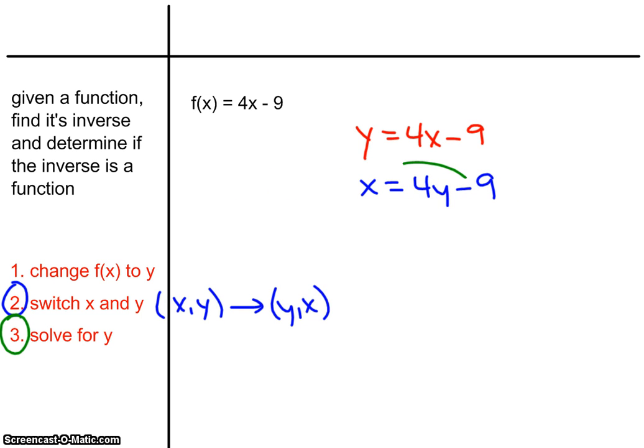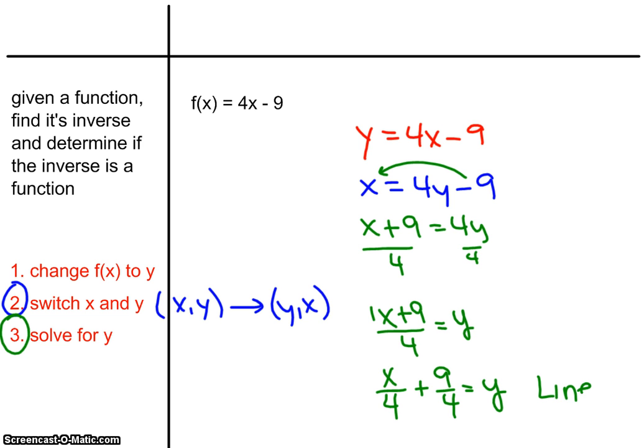so first thing what I'd do is I'd bring the 9 over and here's what I was talking about changing sides changing sides and now I'll divide the whole thing by 4 now if I take this left side and divide 4 into both pieces